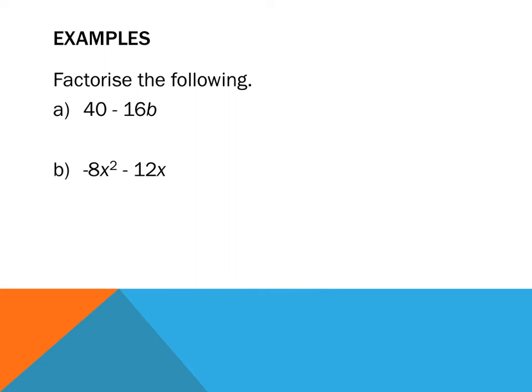So factorize the following. What we need to do is we need to put the highest common factor of these two terms on the outside of the brackets. So let's look at 40 and 16b. Now there's only one pronumerals so I can't have a common factor amongst my pronumerals. 40 and 16.